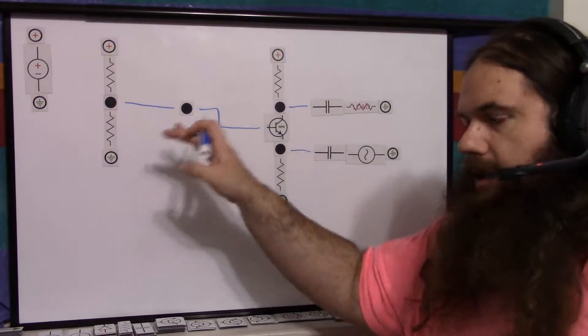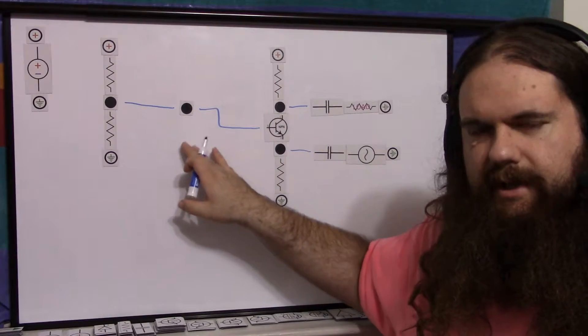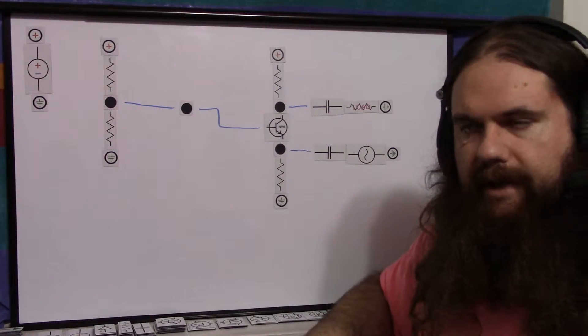So that's the output, and the input is applied to the emitter. So input on the emitter, output from the collector, and the base is just biased. So common base, neither signal is applied at the base.